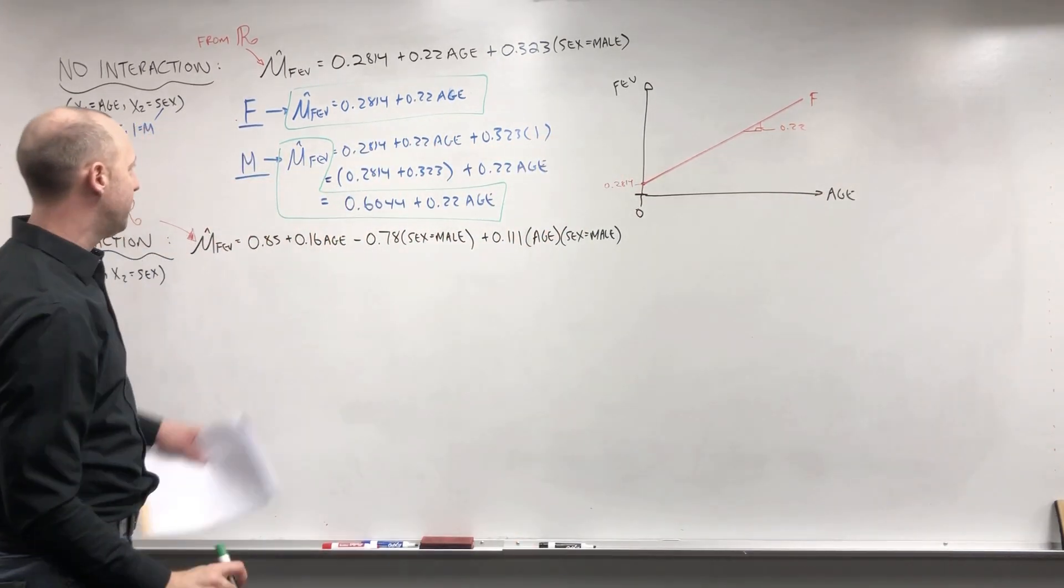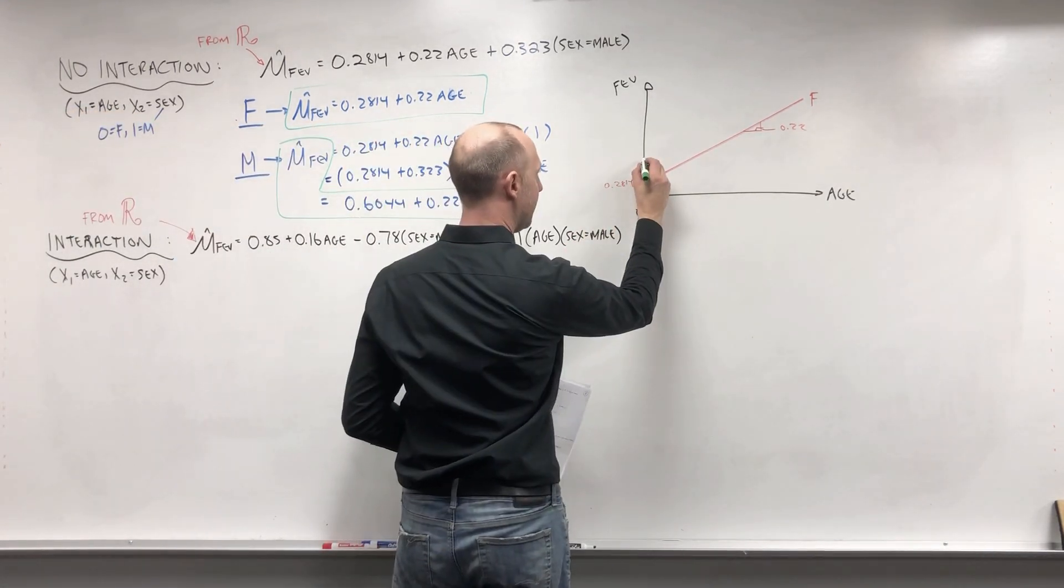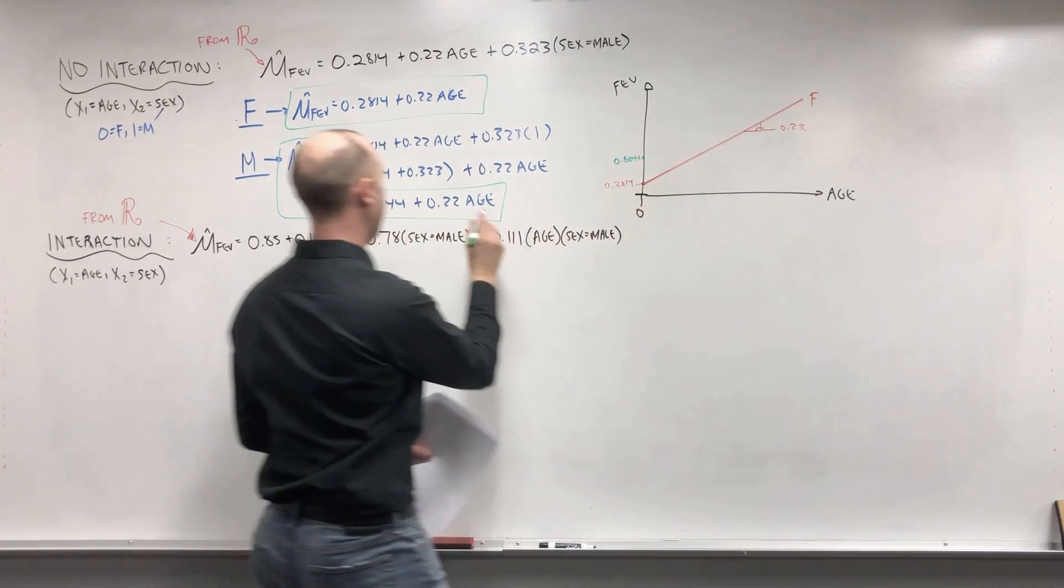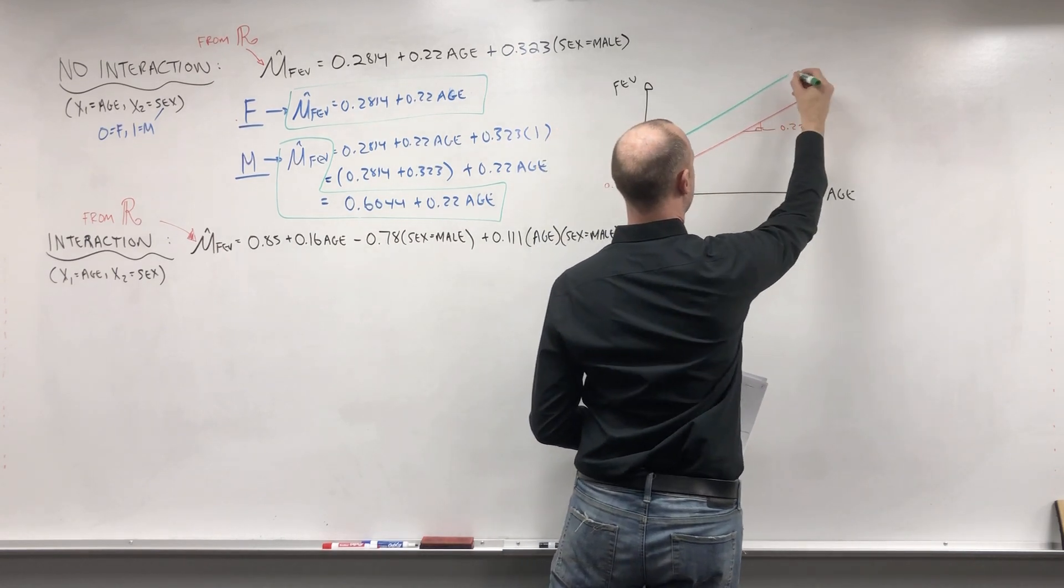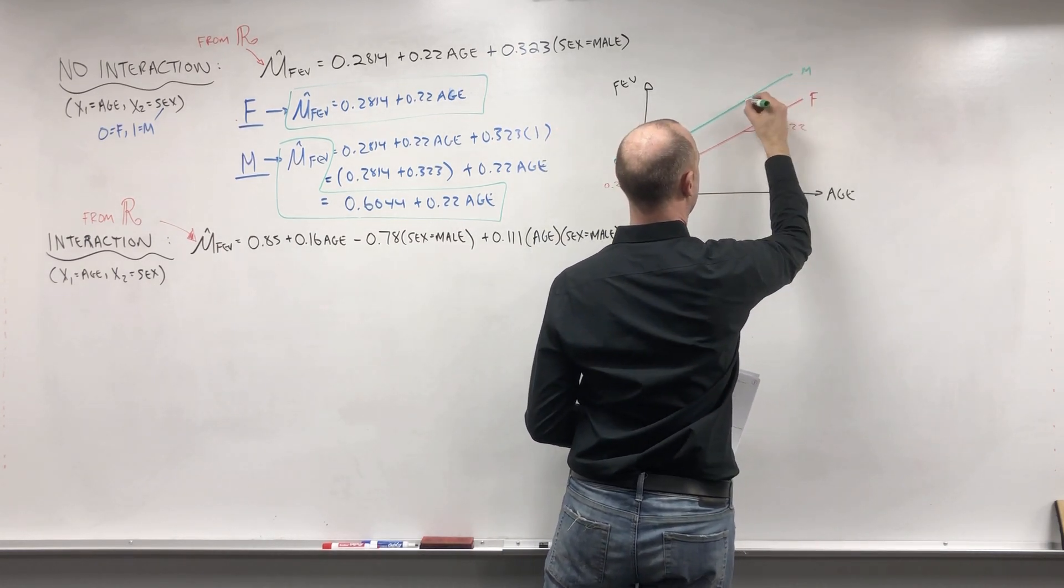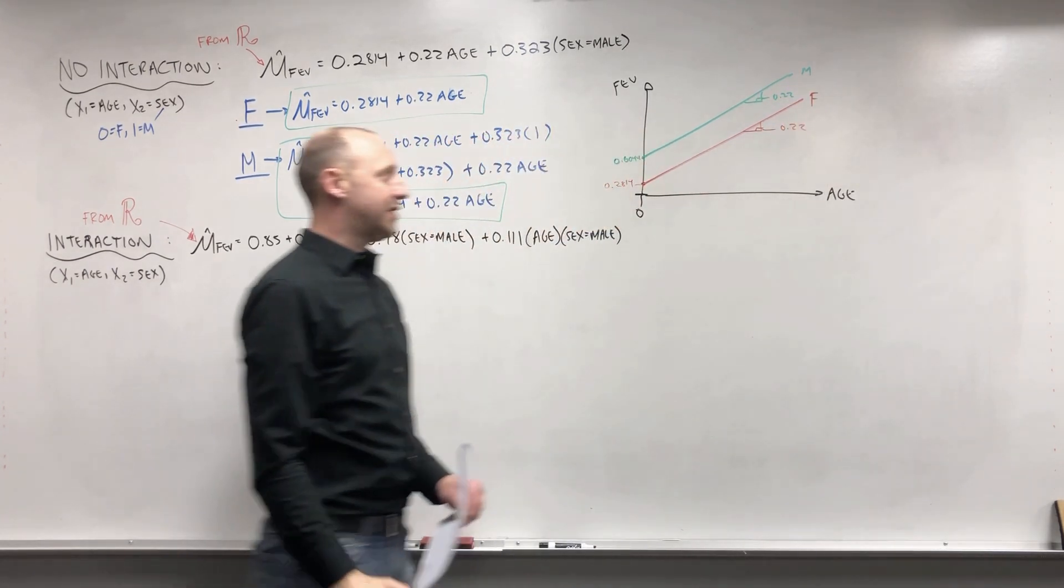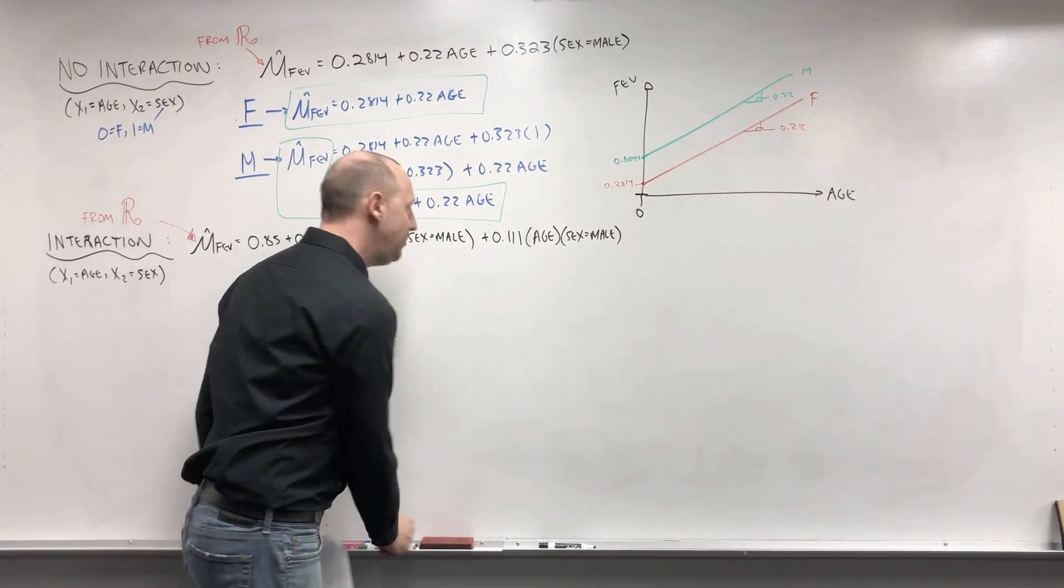Now if we look at it for males, their intercept is 0.6044. So up here, 0.6044 and the slope of 0.22. So here it is for males. Again, the same slope, which was by design. We force these two lines to be parallel.